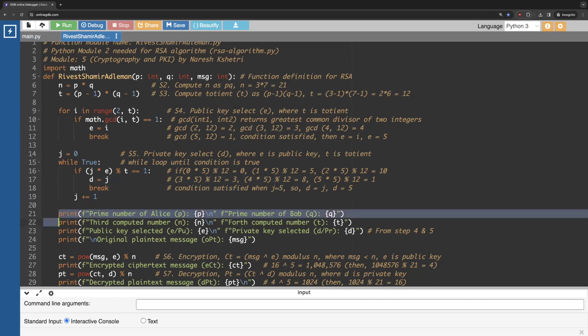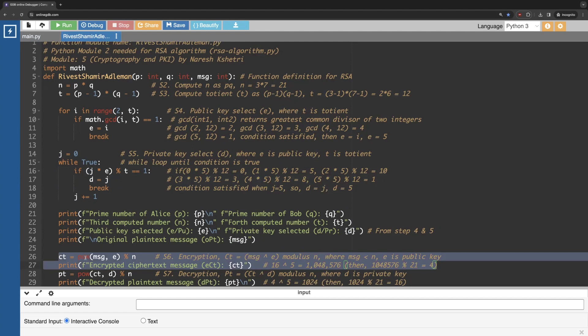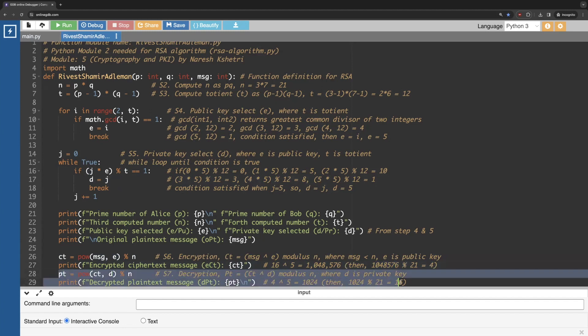So whatever the number provided, prime number of Alice, prime number of Bob, computed number N and T and then public and the private key and the message we pass at 16. And then the last two steps. We compute the encryption. We apply the power function to the message. So 16 raised to the power 5, we get 1048576. When we do the modulus, the remainder we get 4. And on the reverse side when we do the decryption, we do the same thing raised to the power of the ciphertext. So ciphertext 4 raised to the power 5, 1024. Then when we do modulus, we get 16 which is the original plaintext message.